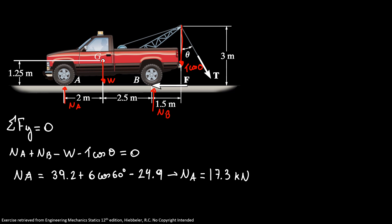So here we found our friction force that's equal 5.20 kN. I have my normal B is equal 24.9 kN. And my normal force in A is 17.3 kN.